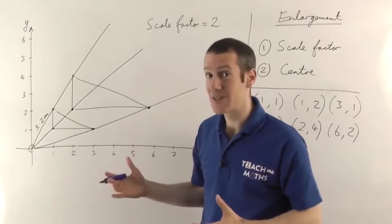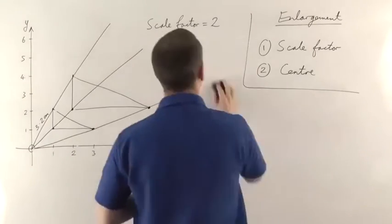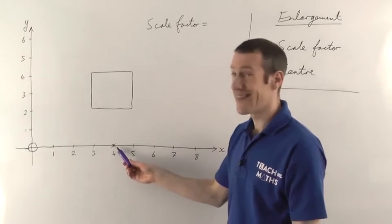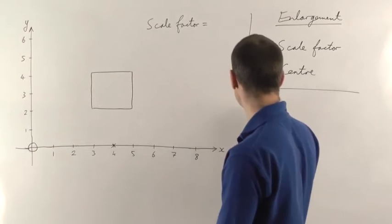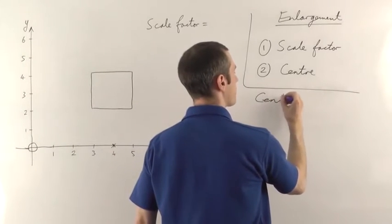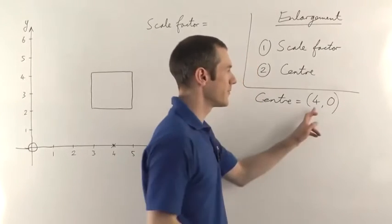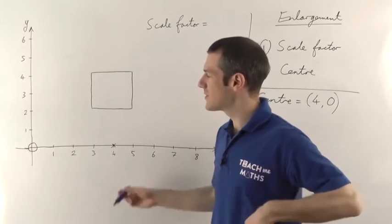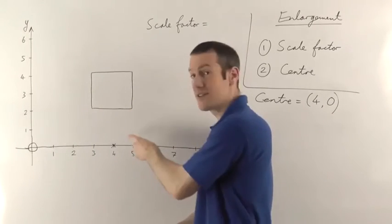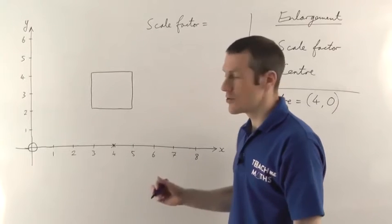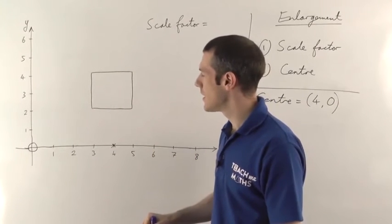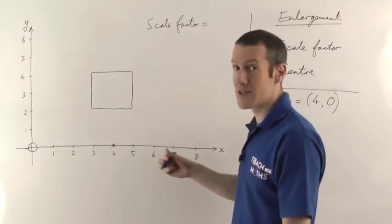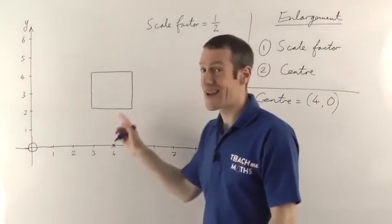I'll draw another example — this time we're going to pick a different centre of enlargement, not the origin. We've got a square now, and this time I'm choosing the centre of enlargement to be the point (4,0): that's 4 in the x-direction and nothing in the y-direction, so we go 4 to the right and don't go up or down. If they give you a centre that's not the origin, they'll usually tell you what the centre is as a coordinate. You need to find where it is on your axes and mark that point. You can't use the coordinate-doubling method here — it's not going to work. So the first thing you need to do is draw a straight line from the centre through each corner of the shape.